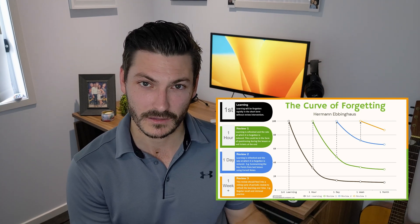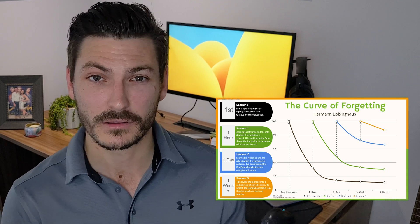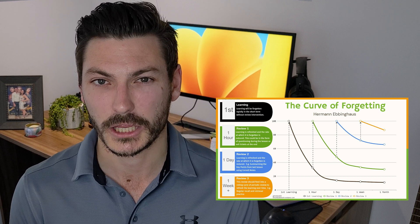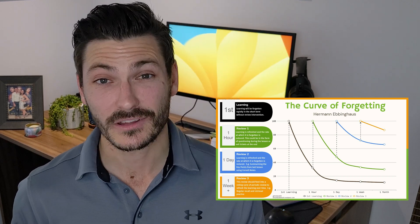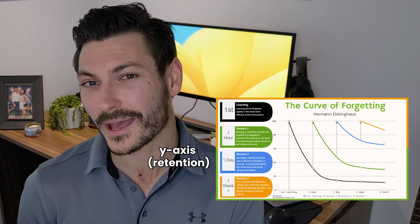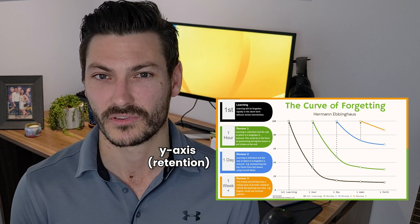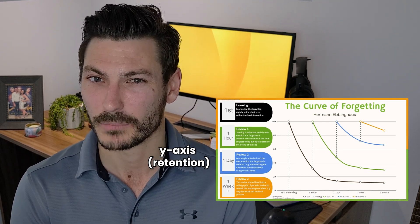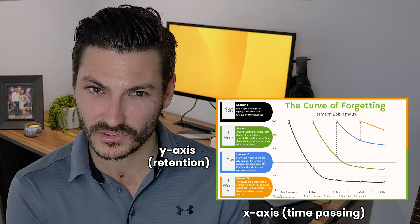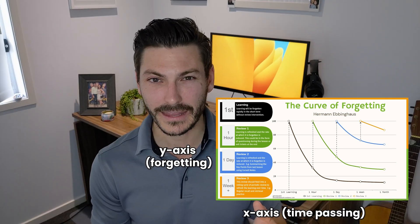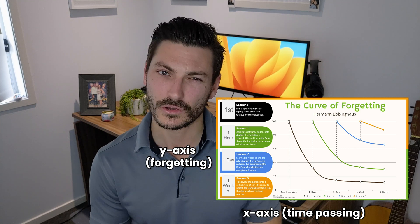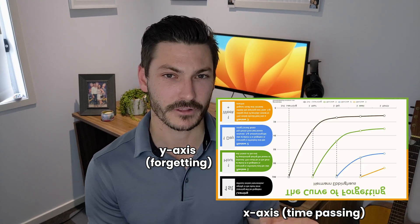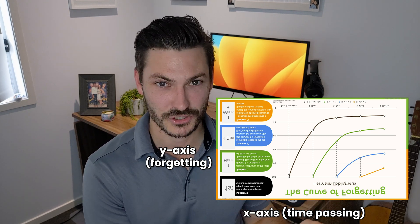The forgetting curve was first coined by Herman Ebbinghaus in 1885, and it's a visual representation of how much information is retained over time. Now you may be familiar with it already, but there are a couple of misnomers I want to clear up. The y-axis actually represents the retention rate of information over time, and because time passes on the x-axis and retention drops, it takes this shape. If it were truly a forgetting curve it would be the inverse — forgetfulness rising over time — but we call it the forgetting curve even though it models retention.